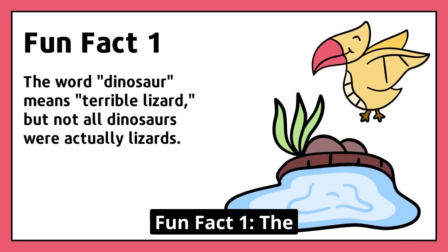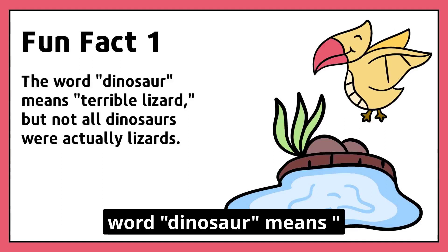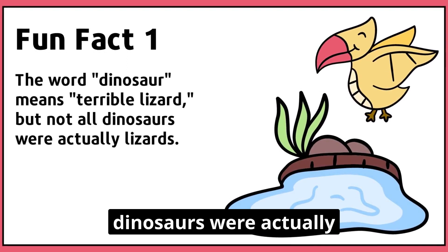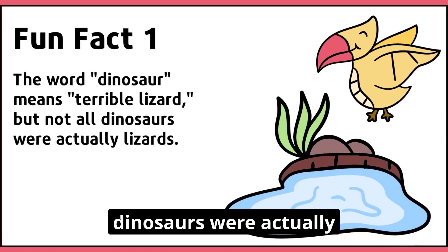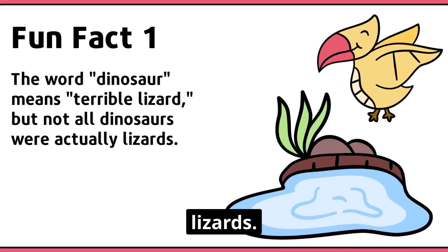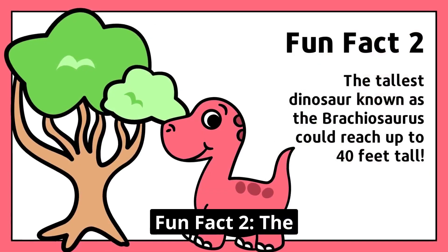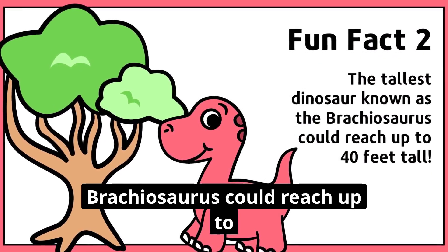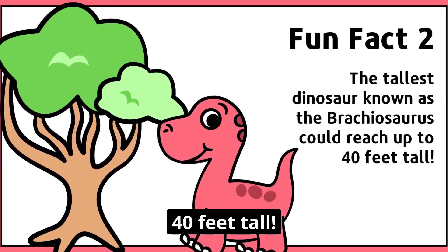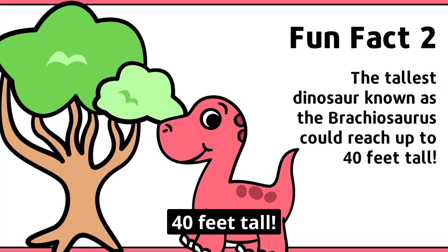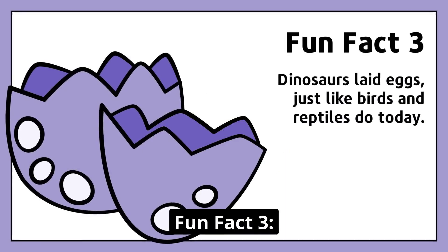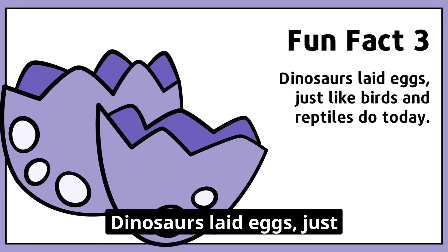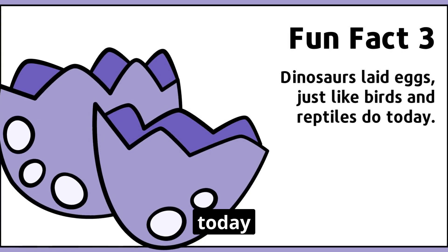Fun Fact 1: the word dinosaur means terrible lizard, but not all dinosaurs were actually lizards. Fun Fact 2: the tallest dinosaur, known as the Brachiosaurus, could reach up to 40 feet tall. Fun Fact 3: dinosaurs laid eggs, just like birds and reptiles do today.